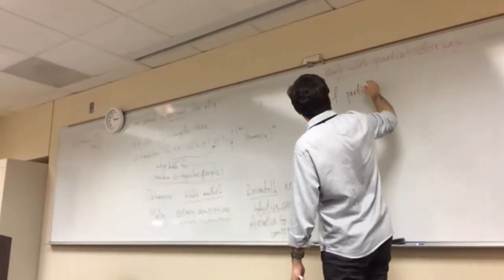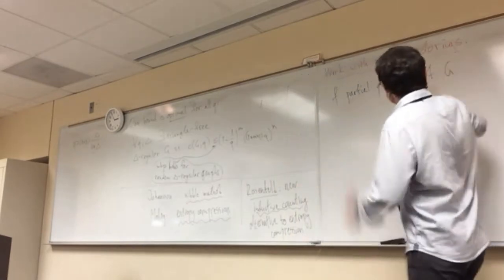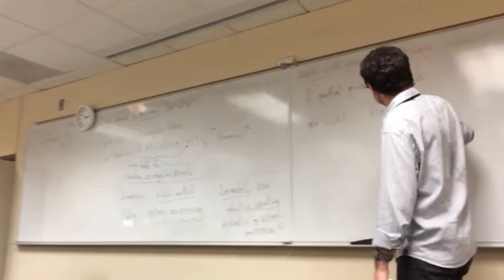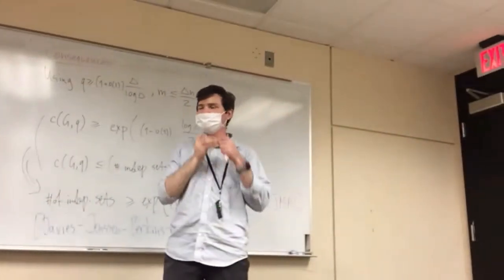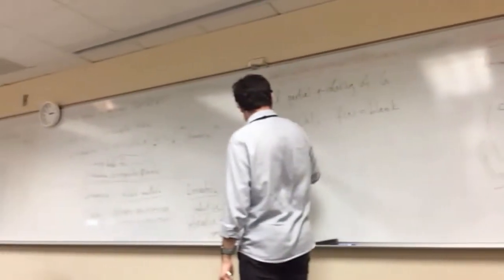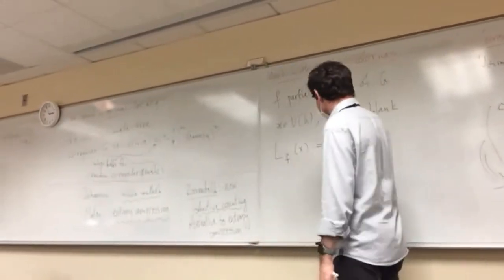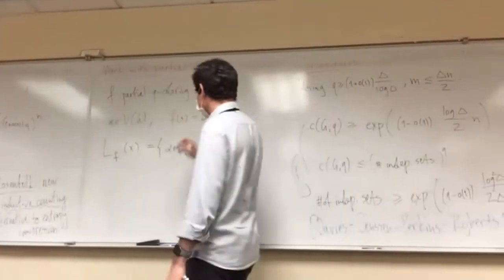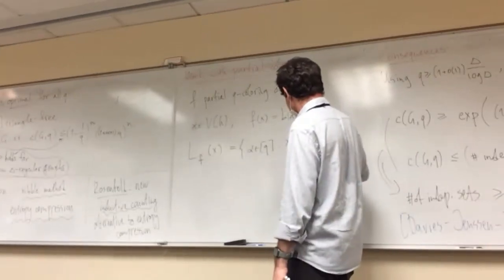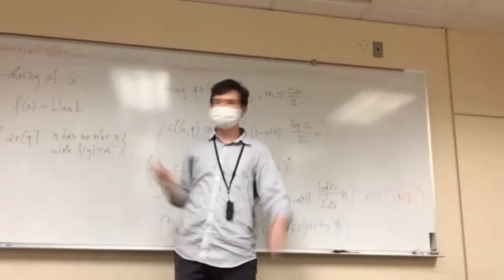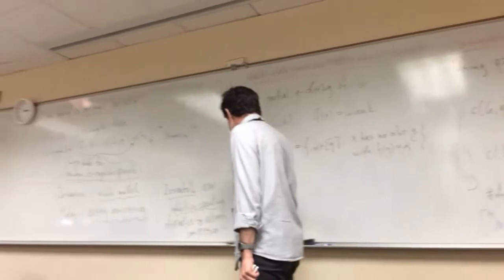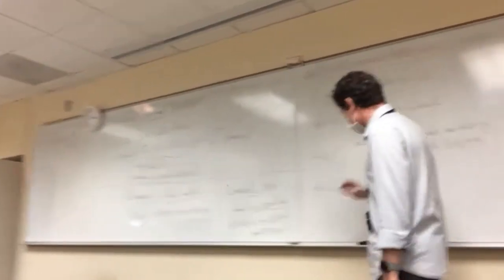Let f be a partial q-coloring of G, and let x be an uncolored vertex — so f(x) is blank. We want to color x while keeping the coloring proper. Since x already has some colored neighbors, we cannot use their colors. So we define L_f(x) as the set of all colors alpha in {1, ..., q} such that x has no neighbor y with f(y) = alpha. These are the available colors for x, and we want this set to be as large as possible.